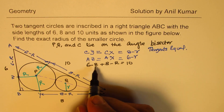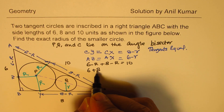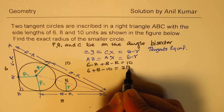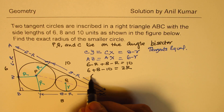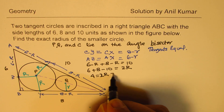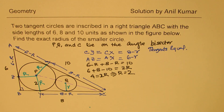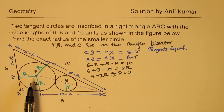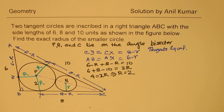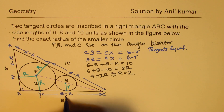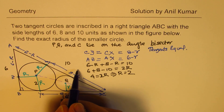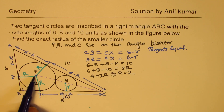Taking R to the other side: 6 plus 8 minus 10 equals 2R, so 4 equals 2R, giving R equals 2. So the bigger circle radius is 2. Now since we know capital R, we know all the lengths: 8 minus R means this side is 6, and that side is also 6.